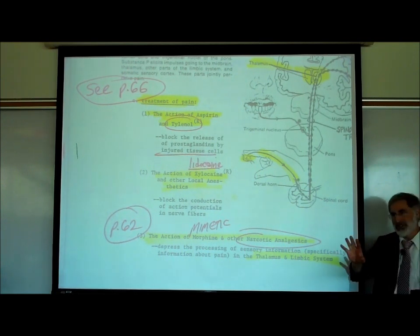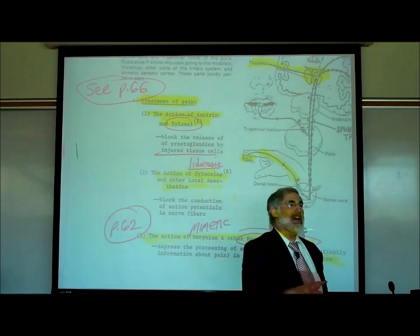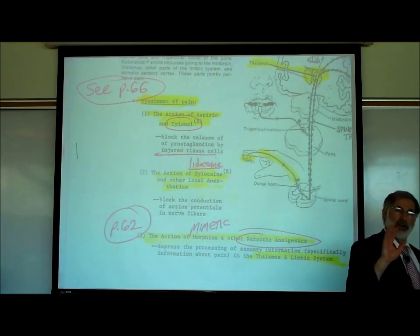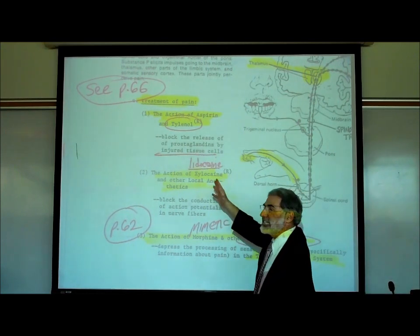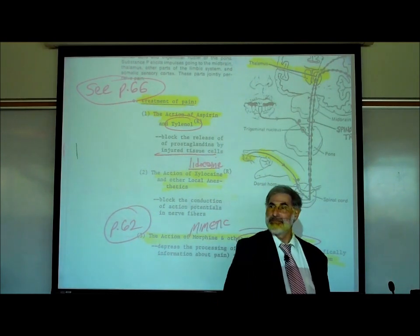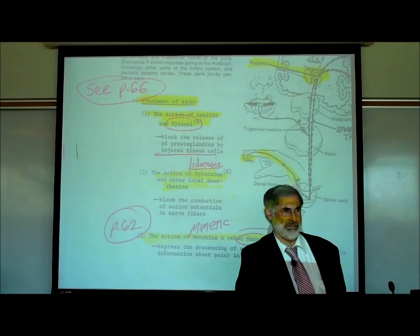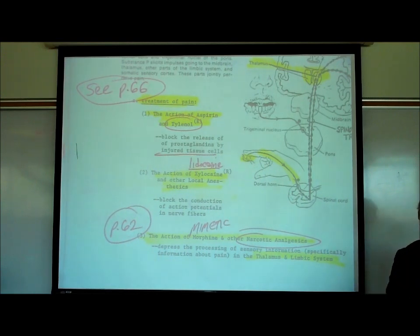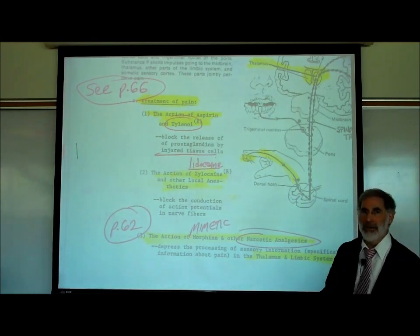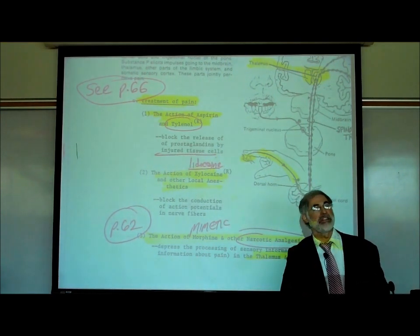True or false: Tylenol acts on the nervous system? False. Tylenol acts on the injured cells — it stops injured cells from releasing a chemical that would have activated a pain sensory neuron. The Tylenol is not a drug acting on the sensory neuron; it's acting on the injured cells.